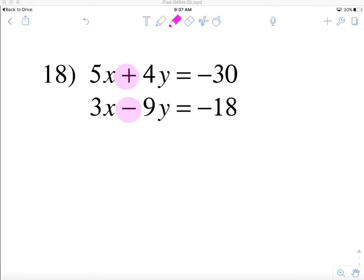Now we do have a positive and a negative so I do like that piece, but I find that the 5x and the 3x in the first column don't really have anything in common, and the 4 and the 9, though one's positive and one's negative and I do like that piece, they don't really have anything in common either.